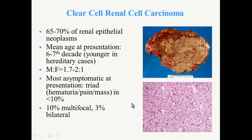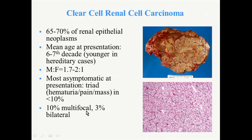Clear cell renal cell carcinoma is the most common renal tumor, about 65 to 70%. The mean age of the patient is about the sixth and seventh decades, with a slight male predominance. Most patients are actually asymptomatic, although in the past the textbooks described the triad of hematuria, pain, and mass — but this is actually quite uncommon. About 10% of tumors may be multifocal, and 3% are bilateral.